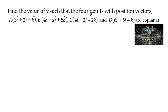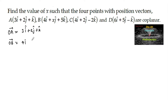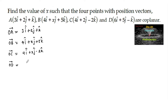Find the value of x such that the four points with position vectors A = 3i + 2j + k, B = 4i + xj + 5k, C = 4i + 2j - 2k, and D = 6i + 5j - k are coplanar. So given: OA = 3i + 2j + k, OB = 4i + xj + 5k, OC = 4i + 2j - 2k, and OD = 6i + 5j - k.